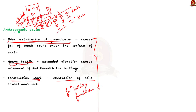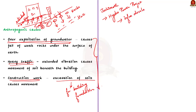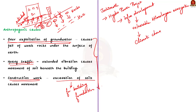Coming back to the Joshimath case: the primary reason is believed to be the NTPC's Tapavan Vishnugad Hydropower Project. Rampant infrastructure development without a plan is making the fragile Himalayan ecosystem even more vulnerable to the effects of climate change, which acts as a force multiplier. Joshimath has been declared a landslide subsidence zone and over 60 families living in uninhabitable houses have been evacuated to temporary relief centers.